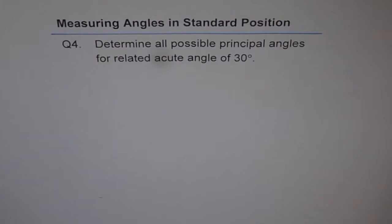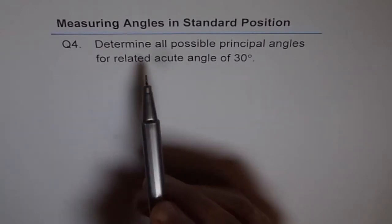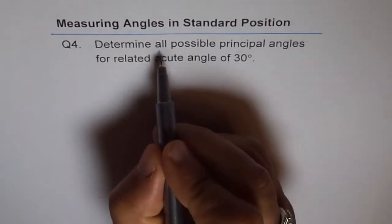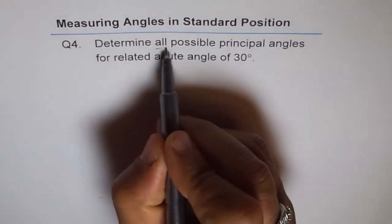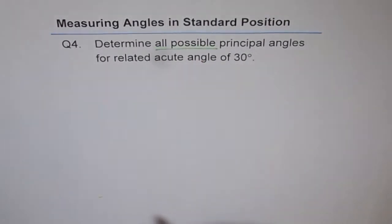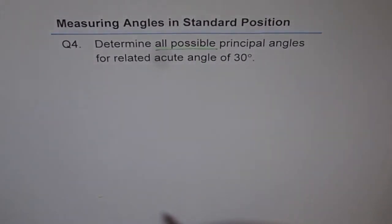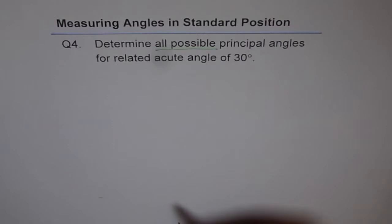I find many times some angles are missed by the student — they get some of course. So here are my solutions. We are saying all possible, so the key word here is all possible principal angles for a related acute angle of 30 degrees. Can you tell me how many possible principal angles there will be? Think about it and then sketch them.